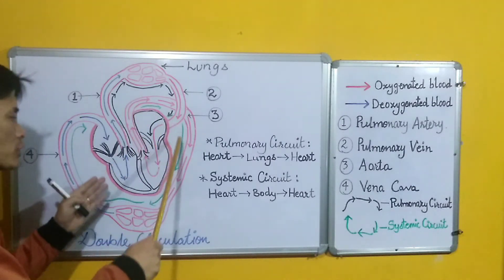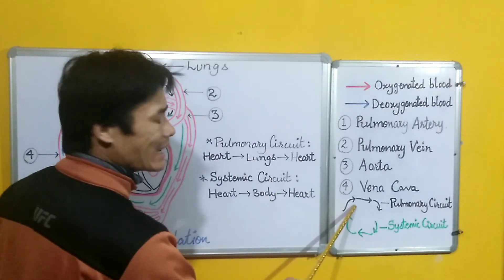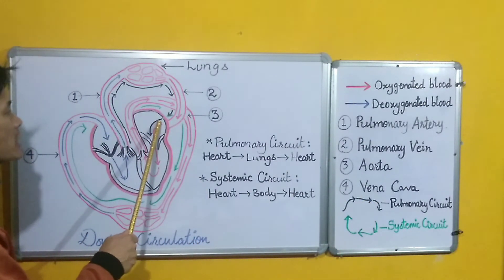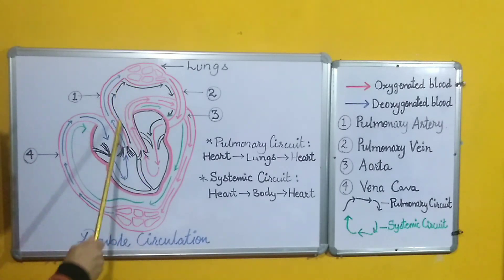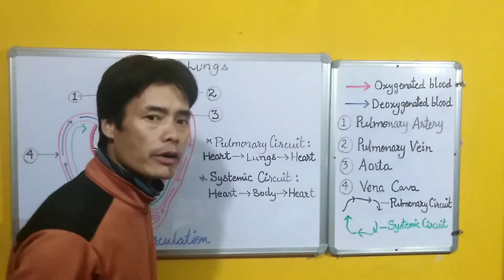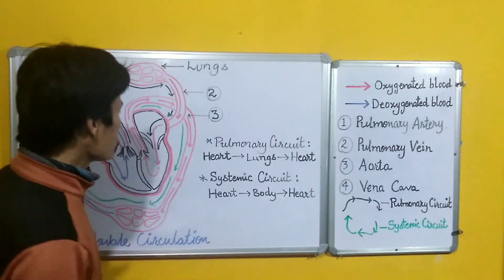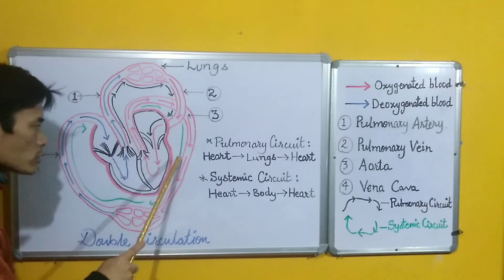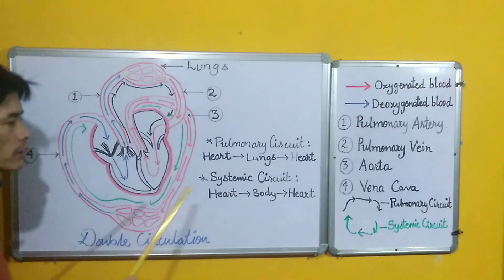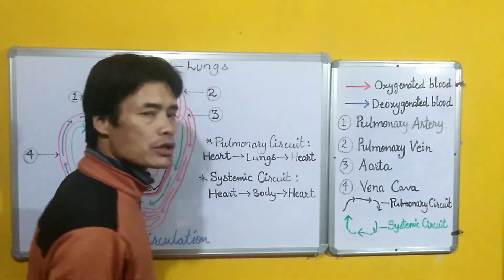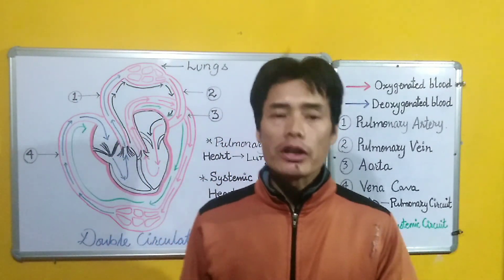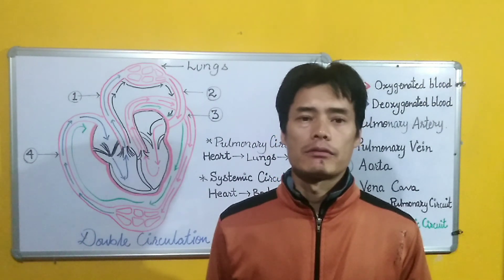There are also two other colors used for the arrows in this circulation. The black arrows shown in the diagram indicate pulmonary circulation. The green arrows represent systemic circulation — showing the movement of blood through the systemic circuit. This was, in brief, the concept of double circulation. Thank you.